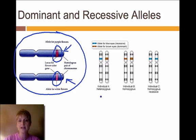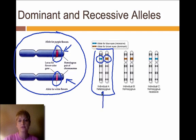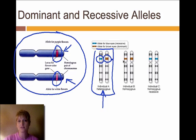We have some naming systems for this. In this situation, we have a recessive allele for blue eyes and a dominant allele for brown eyes. What happens is the dominant allele is expressed, but we call this combination heterozygous. Heterozygous means different — they have different alleles. So they have one allele for blue eyes and one allele for brown eyes. It's a heterozygous combination of alleles, but the dominant is going to be expressed.